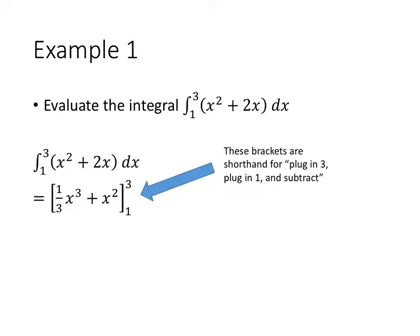Now normally when we take antiderivatives, we add plus c at the end, but one nice thing about the fundamental theorem of calculus is that it tells us that we can use whichever antiderivative we like. So we're going to make our lives easier and choose the antiderivative where the c is equal to 0. So we just have 1 third x cubed plus x squared, which is an antiderivative of x squared plus 2x.